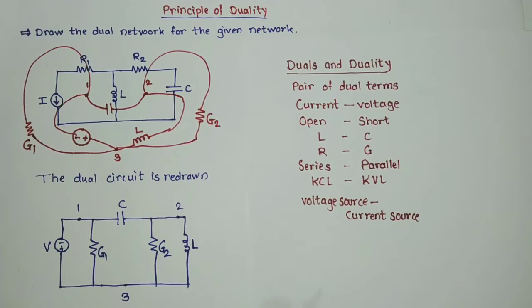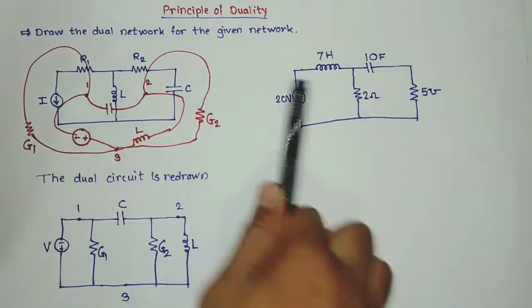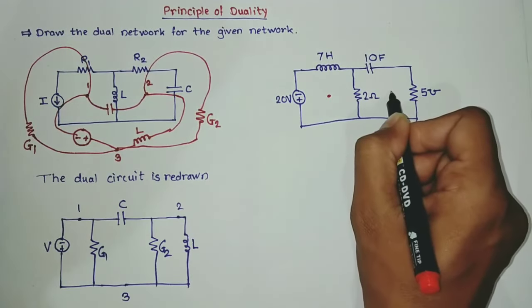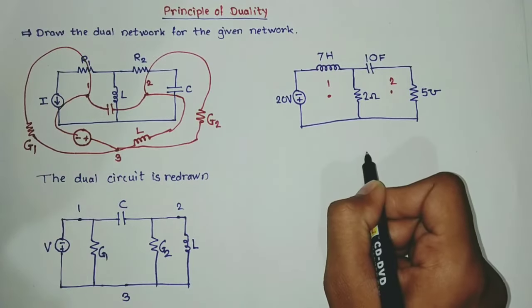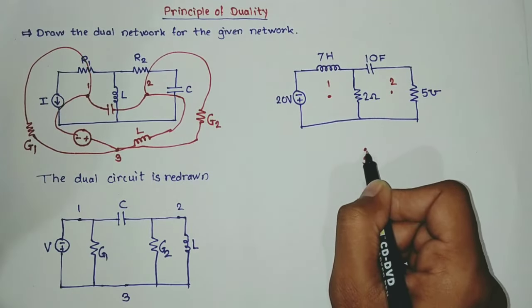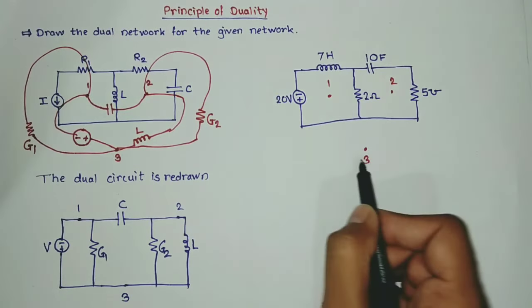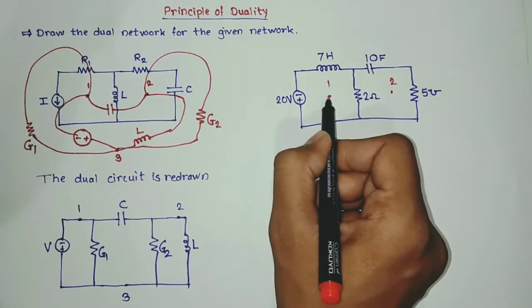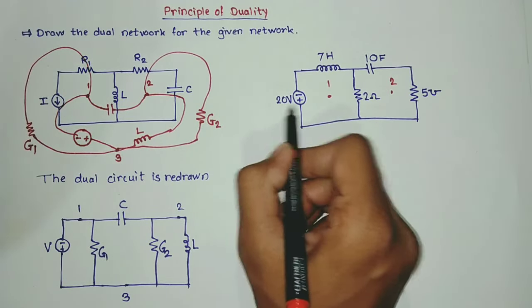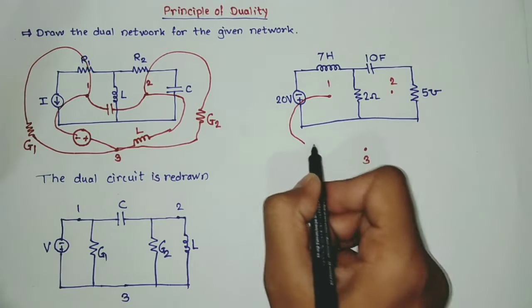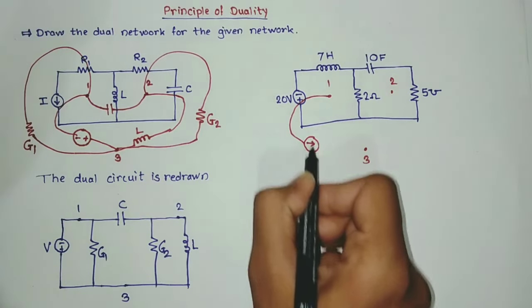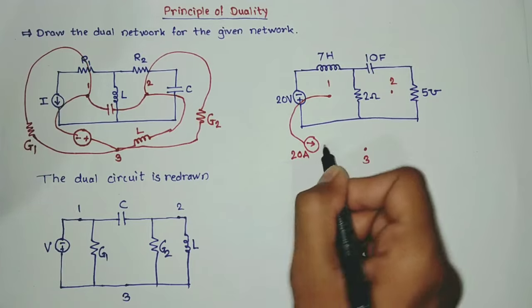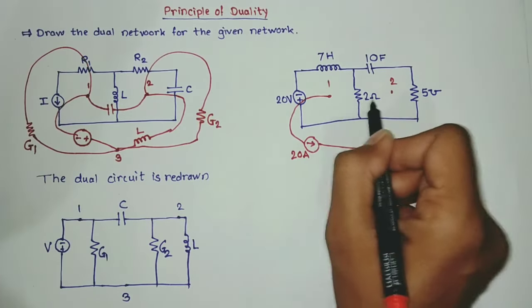Here is another problem for the dual network. Let us draw the dual network. Same procedure again — we have to mark the nodes. This third node is our reference node, drawn outside. In between one and three the voltage source is there with a value. This voltage source is replaced by a current source. The positive direction is downward, so this is a current source and the 20 volt is replaced by a 20 ampere current source.